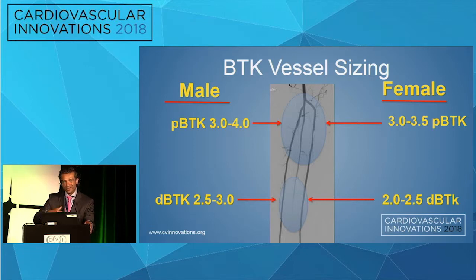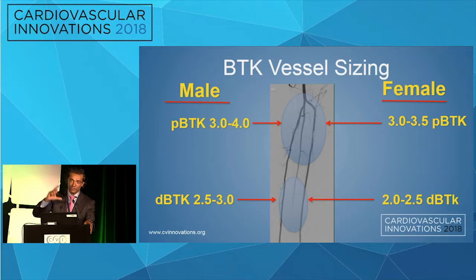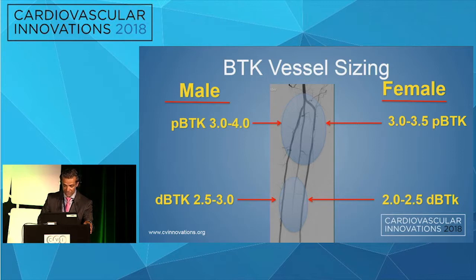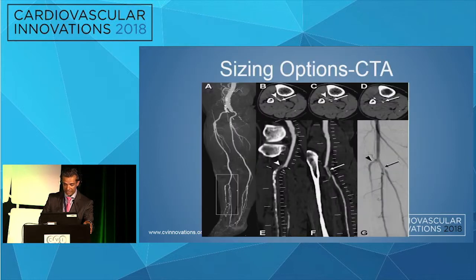What I really like for the infrapopliteal vessels are tapered balloons. The NanoCross from Medtronic is a really nice balloon because it has that taper — it'll go from 2.5 to 3.0 or 3.0 to 3.5, to account for that infrapopliteal taper. For the pedal arteries, in men I use 2.0 to 2.5 below the ankle, and once I get really far distal I use 1.5. In females, slightly less.